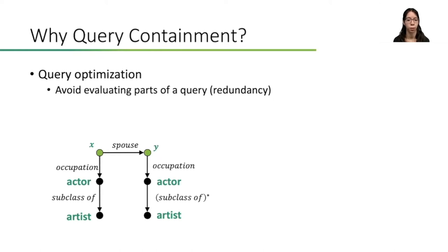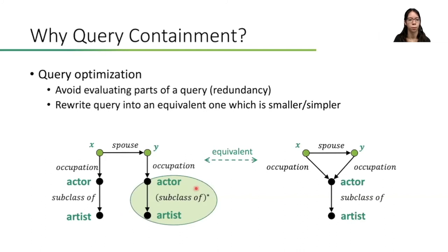In the example below, we clearly see that it is redundant to ask whether actor is a transitive subclass of artist, since the other part of the query asks us to verify that actor is a direct subclass of artist. Besides that, we can also use query containment checks to see if queries are equivalent. This might allow us to rewrite a large query into a smaller one, which might be easier or faster to answer. So, we see that query containment is useful.